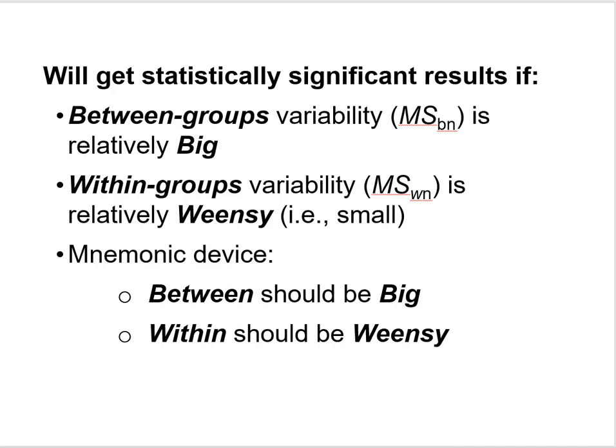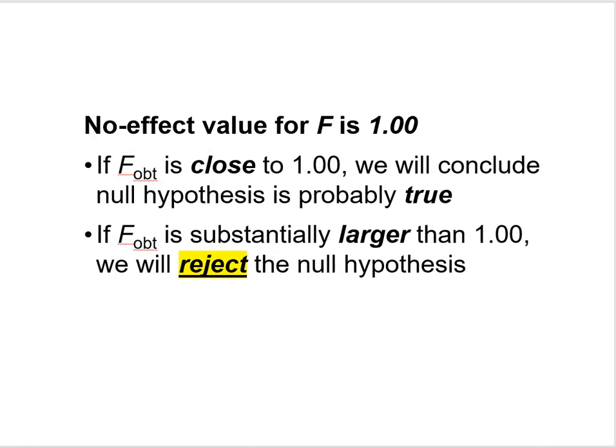With each statistic we've covered this semester, it's important to be familiar with the no-effect value. The no-effect value for the F statistic is 1.0. If you do an analysis and your obtained F statistic is close to 1.0, you'll conclude the null hypothesis is probably true. On the other hand, if your obtained F statistic is substantially larger than 1.0, then you'll reject the null hypothesis. Later on we'll talk about just how large your obtained F statistic has to be.